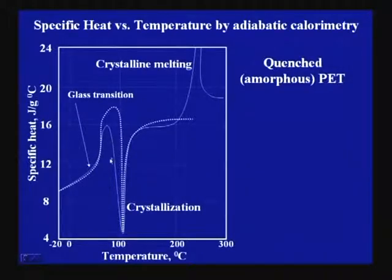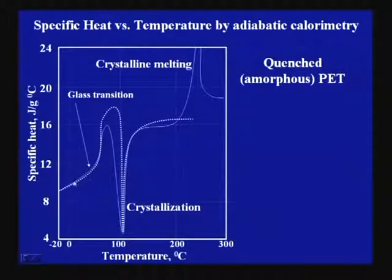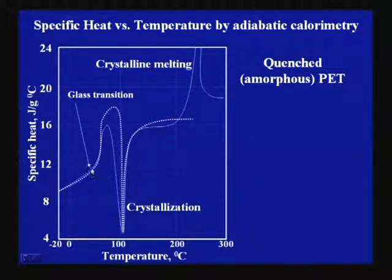This is another diagram which shows the change of specific heat values of polymers with increase or decrease in temperature. From the definition of specific heat, you can understand that it shows a change in the slope of this curve — although it is not a sharp change, a gradual change is there. In order to get the transition, you have to draw tangents at two points; then at the crossover point of the tangents, that point gives you the glass transition temperature.